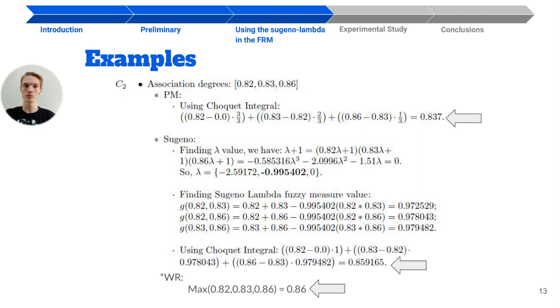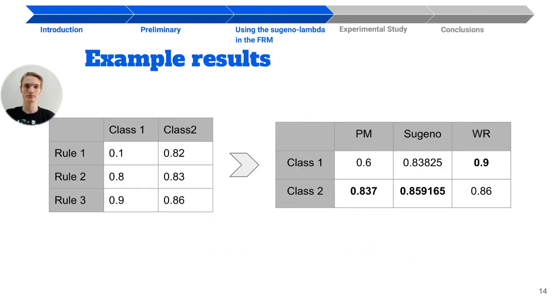So now I want to show to you what you can see with the results obtained in this example. At the left, we have the association degrees from class 1 and 2, and on the right, the results of the FRM using different heuristics.